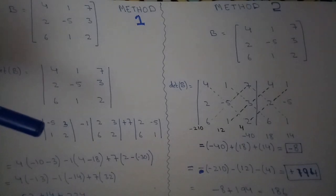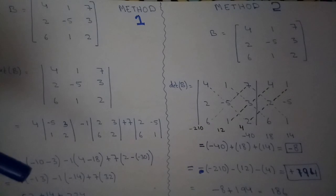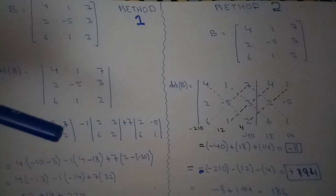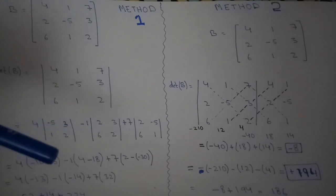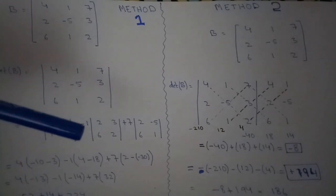We will multiply minus 5 into 2 minus 3 into 1, that will be minus 10. And 1 and 3 multiplied by 3 will be 3.